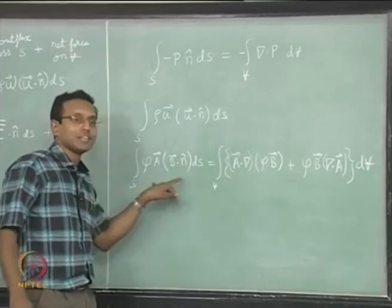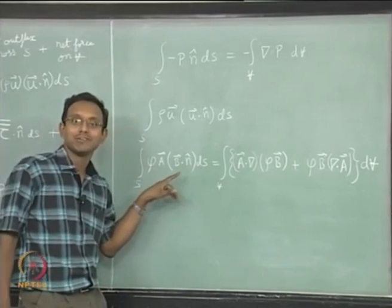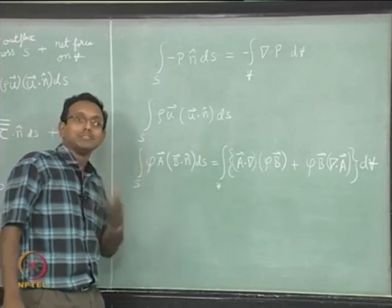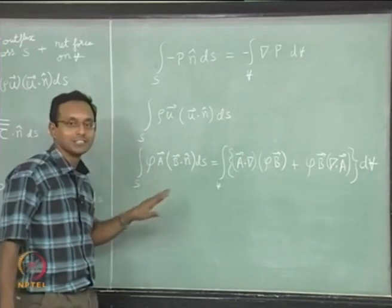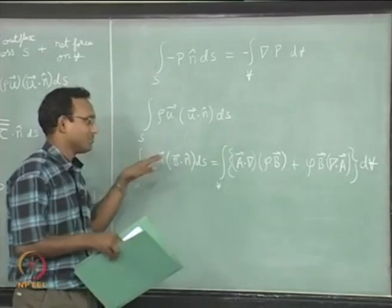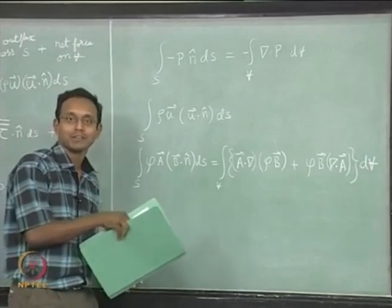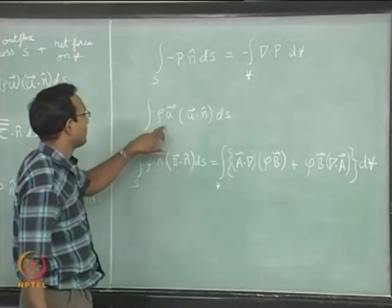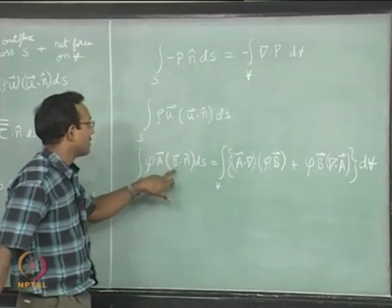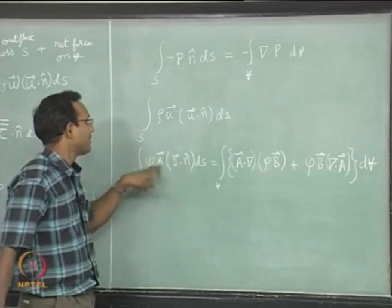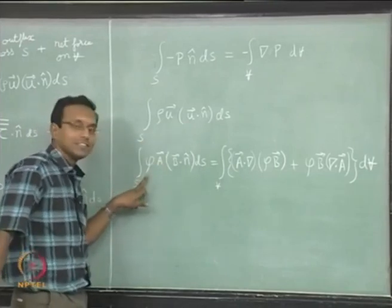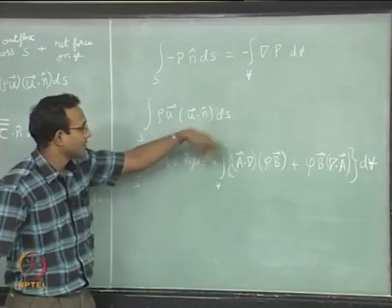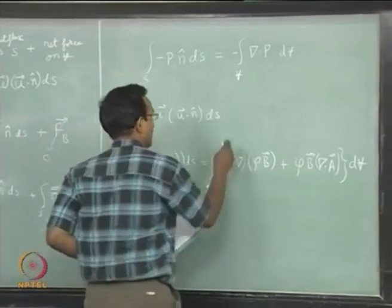If you are using tensor notation — Einstein notation, index notation — then life will become a little easier, but I do not want to teach that in this course. So we will just use vector notation and get over with it; we will use it only once in this whole course at this point. My B vector is a velocity vector, A vector is another velocity vector, and phi is a scalar — that is my density in this case. Now I just have to find the parallel and write the equation.